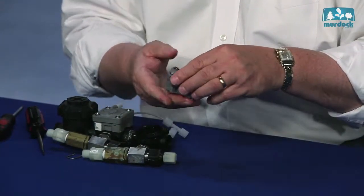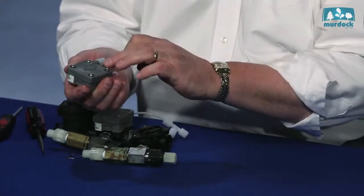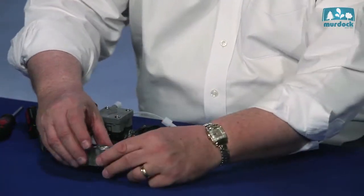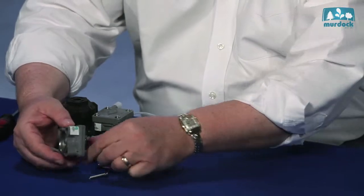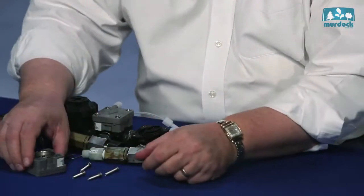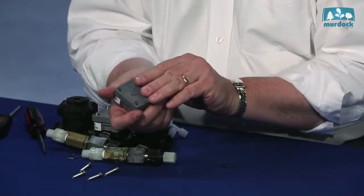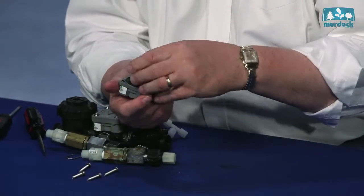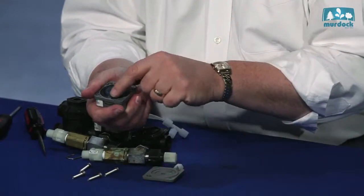To take the rest of this apart, again, what I always do since there's lock washers here is flip it over and make sure it stays right in front of me. Those four screws that you see here hold this top on and then you pop the top off and there's the diaphragm.